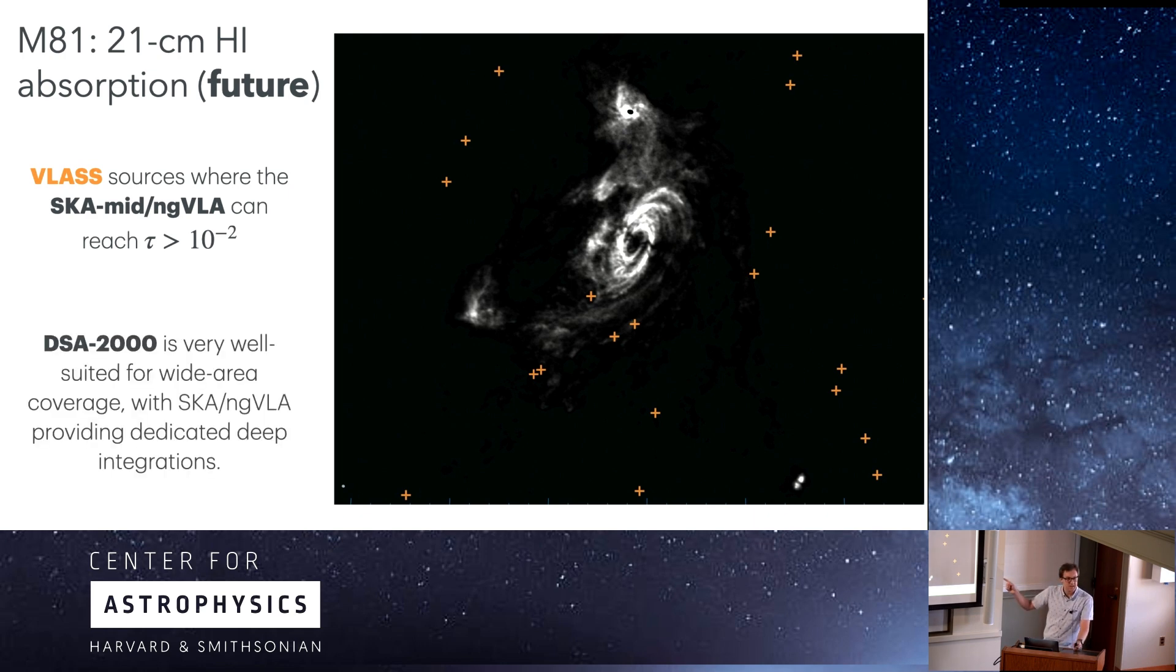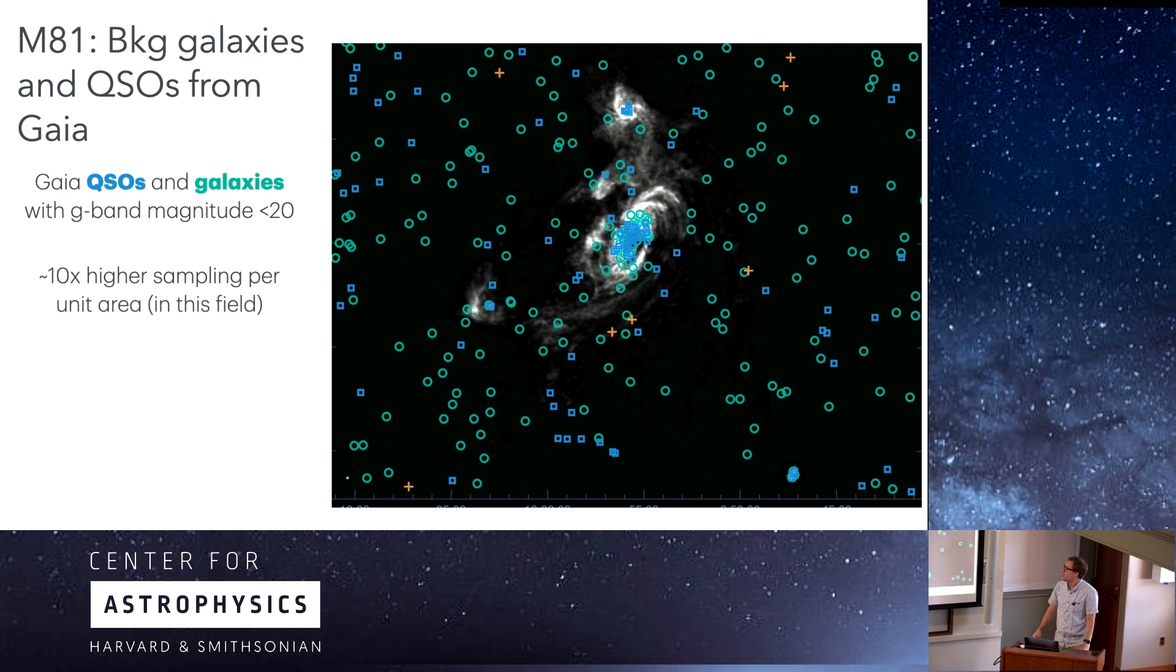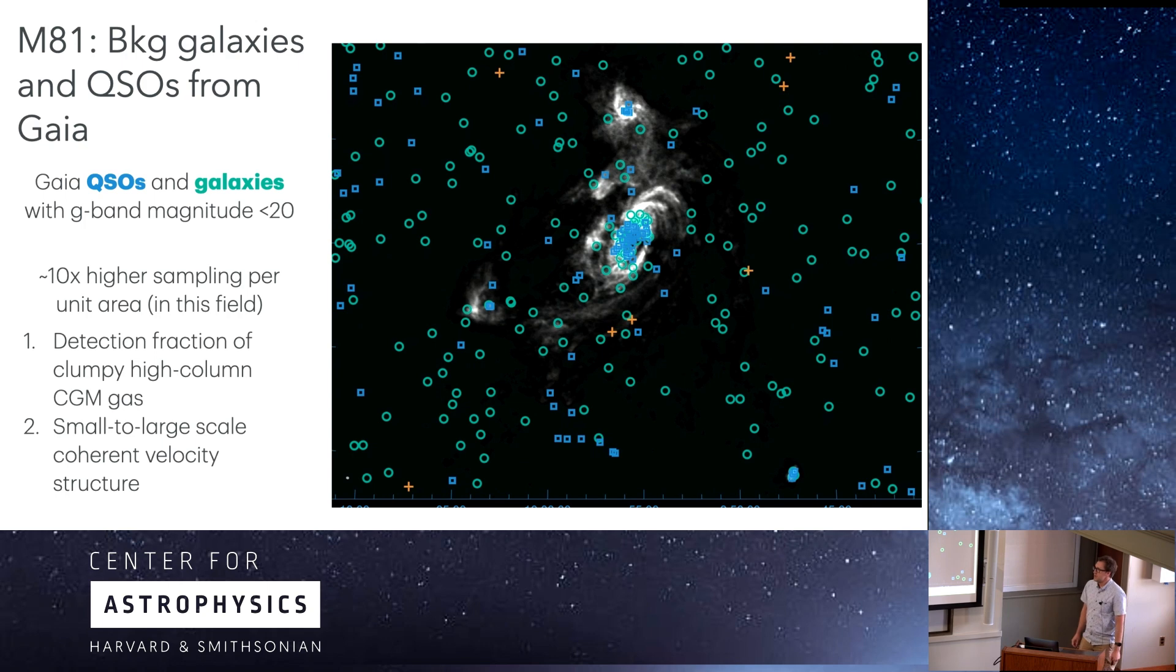I did want to point out, DSA 2000 is going to be extremely good for finding these interesting sources all over the sky. You could imagine doing deeper pointings with the SKA and NGVLA to do better. But really, this brings me to my last point. I love H1, but if we could do this with sodium absorption, you can actually fill in the field significantly better. Even neglecting, these are Gaia QSOs and galaxies with G-band magnitude brighter than 20. Even if we ignore what is clearly just coming from the galaxies themselves in the middle here, it's about 10 times denser. You can imagine trying to use this to much better constrain the detection fraction of this really high column clumpy CGM gas.